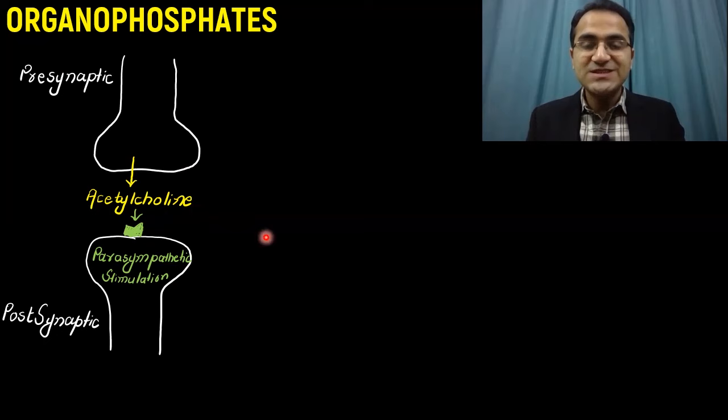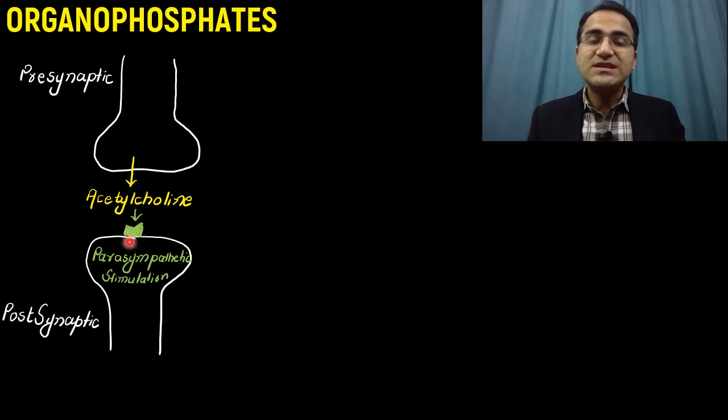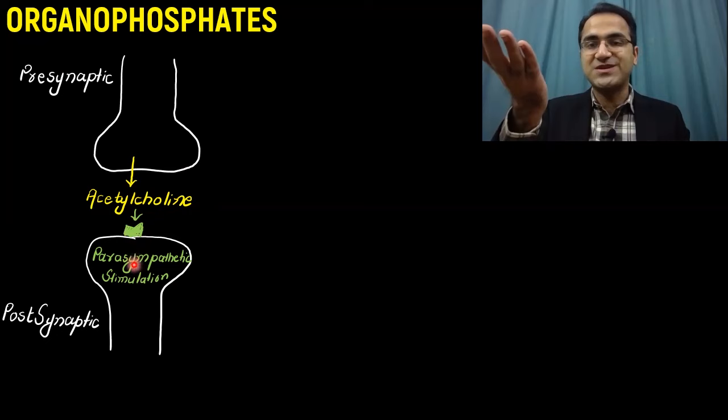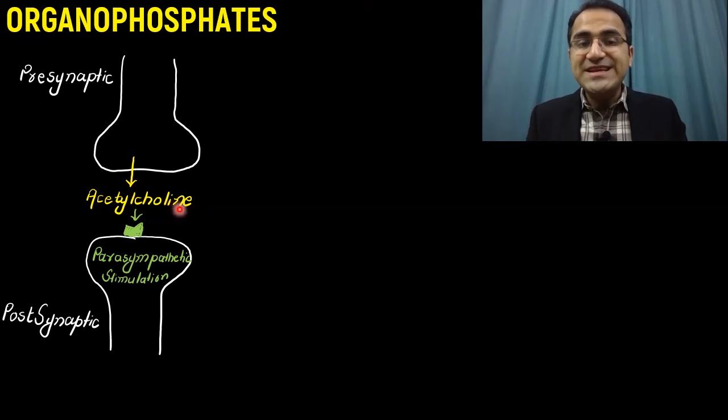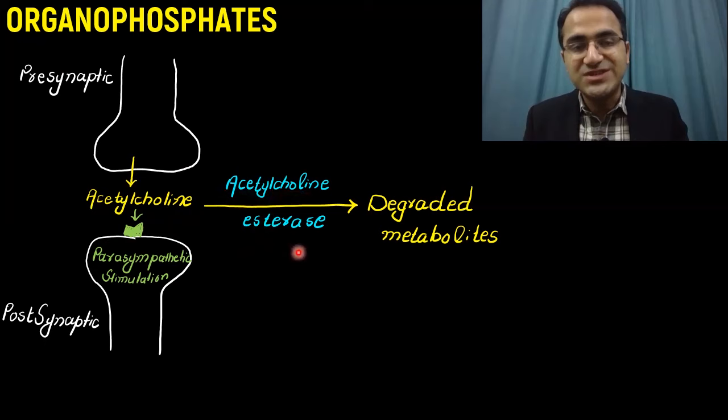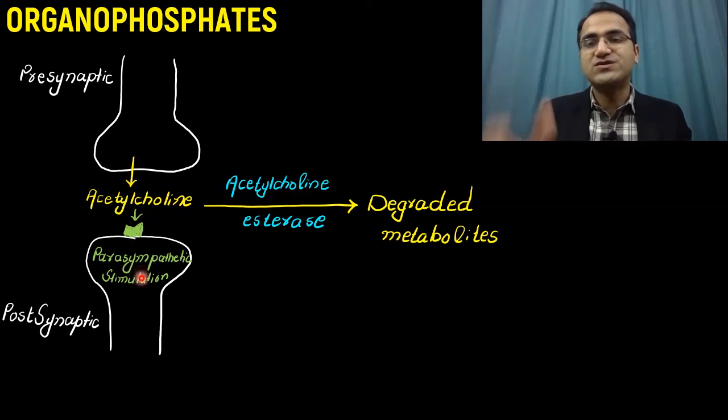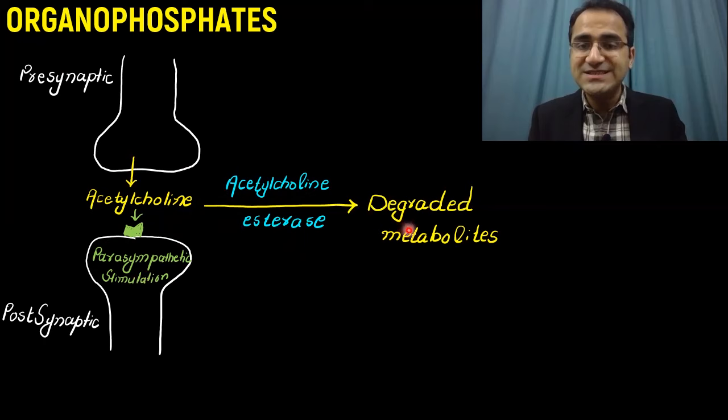Now we will discuss the mechanism of action of organophosphates. We have presynaptic neurons and postsynaptic neurons. These presynaptic neurons release acetylcholine and this acetylcholine binds to the receptors present on the postsynaptic neurons, causing stimulation of the receptors resulting in increased parasympathetic activity. This acetylcholine is then degraded by an enzyme called acetylcholine esterase to prevent overstimulation of the postsynaptic neurons and receptors.